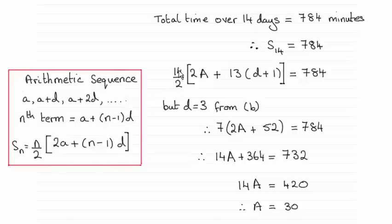So we've got n being 14 over 2, twice the first term. Remember that Zinn spent a minutes on the first day. Then it's plus n minus 1, so that's 14 minus 1 down to 13, times the common difference, which remember was d plus 1. Equate that to 784.